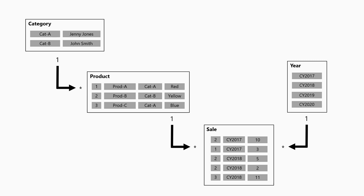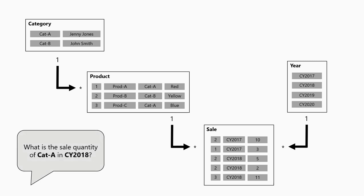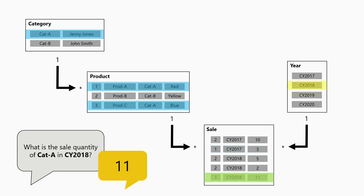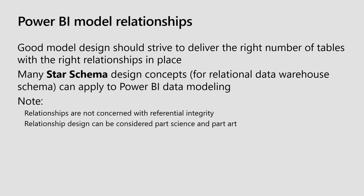We could also add a date or year table. Asking 'what were the sale quantities for category A in 2018?'—at the intersection of those two filters there's just one row, so the answer is 11. Those relationships have a one side and a many side (asterisks), which is a very common design pattern. Good model design should strive to deliver the right number of tables and the right relationships.